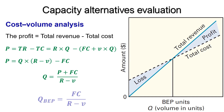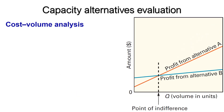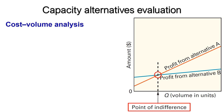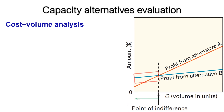A special case is the volume of output needed for total revenue to equal total cost, or zero profit — this is the break-even point, computed using the same formula. Different alternatives can be compared by plotting the profit lines for the alternatives, illustrating the concept of the indifference point. At this point the decision-maker would be indifferent between two competing alternatives. A quantity less than the indifference point would favor alternative B, while a quantity greater would favor alternative A.